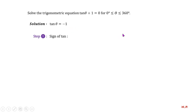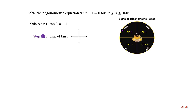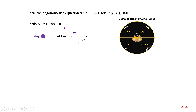To solve this, first determine the quadrants of negative tangent. Remember this diagram? All trigonometric ratios are positive in the first quadrant. Only sine is positive in the second quadrant, meaning cosine and tangent are negative there. Only tangent is positive in the third quadrant, and only cosine is positive in the fourth quadrant. Because tangent is negative, θ is located in the second and fourth quadrants.